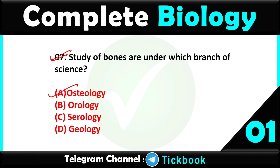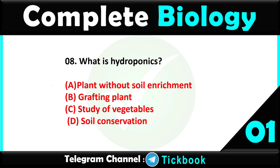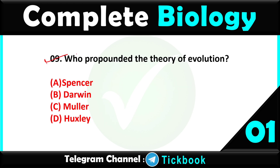Question number eight: what is hydroponics — option number A, plant without soil enrichment. Question number nine: who propounded the theory of evolution — option number B is the right answer: Darwin.